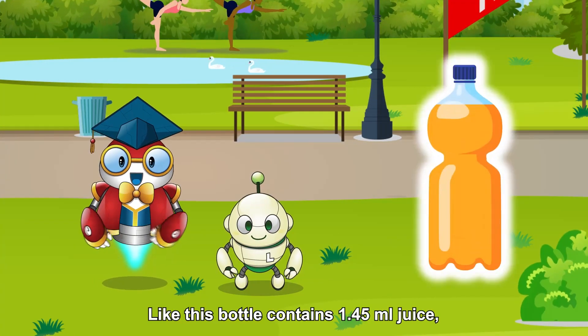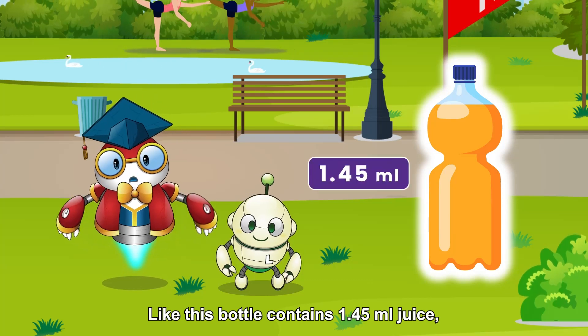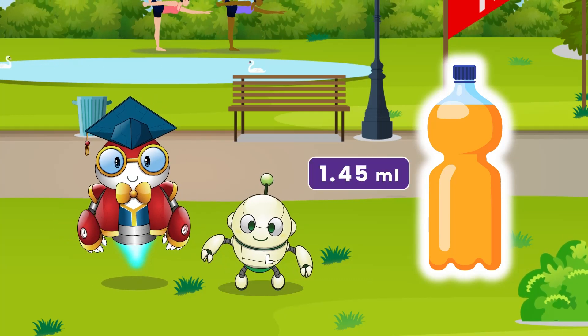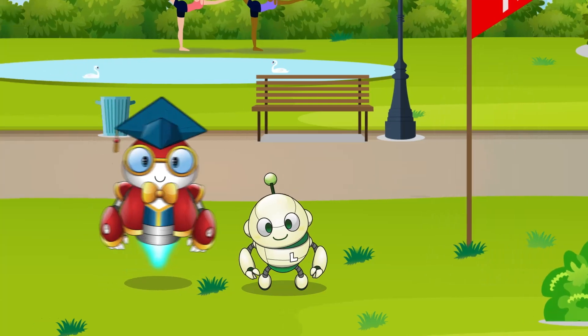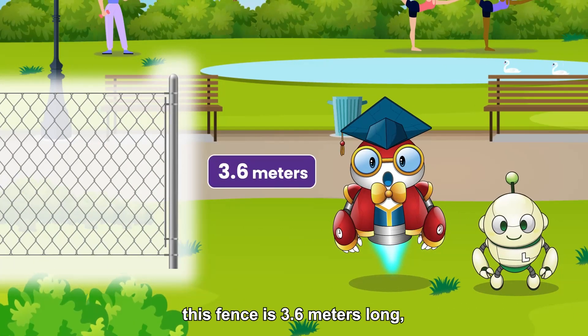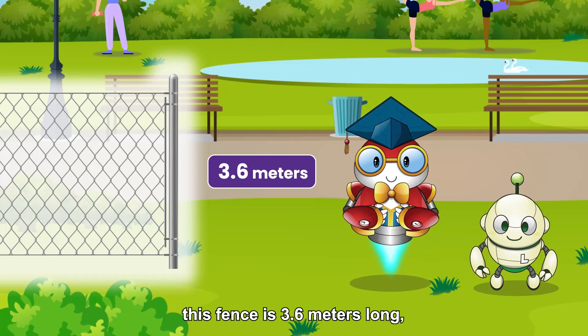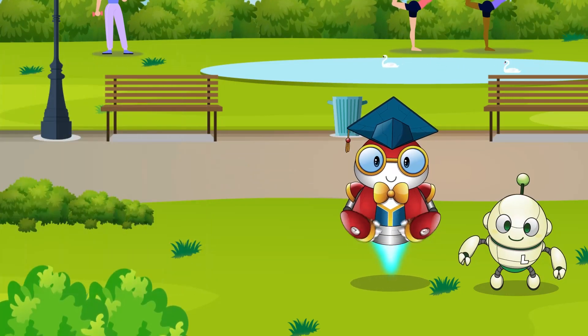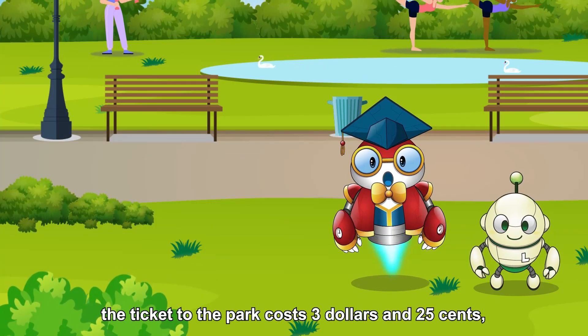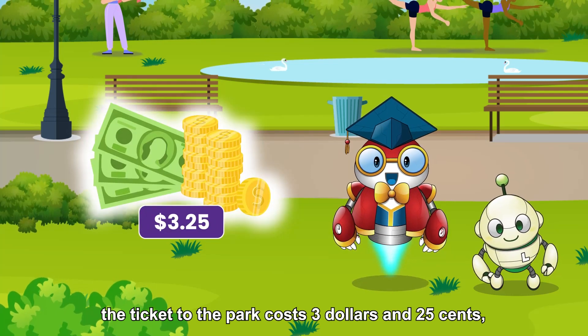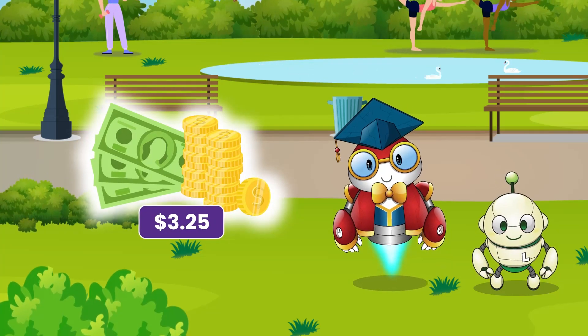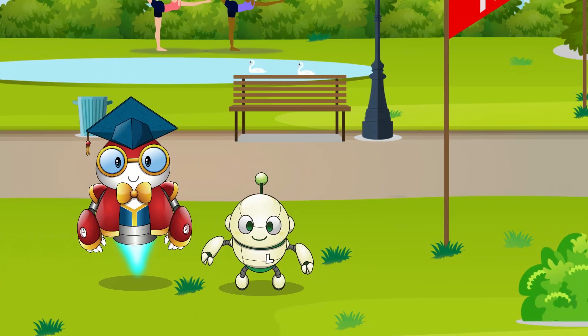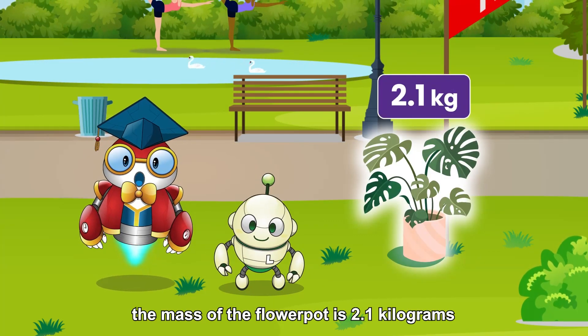Like this bottle contains 1.45 milliliters juice. This fence is 3.6 meters long. The ticket to the park costs $3.25. The mass of the flower pot is 2.1 kilograms.